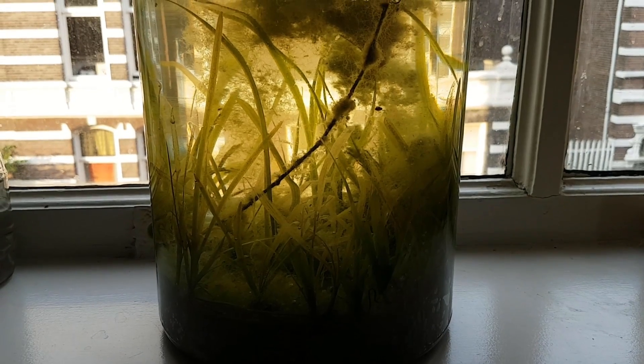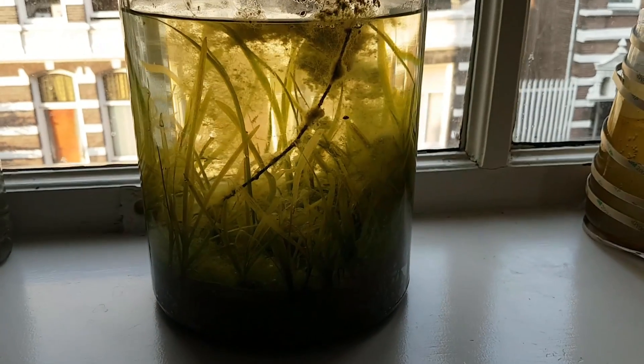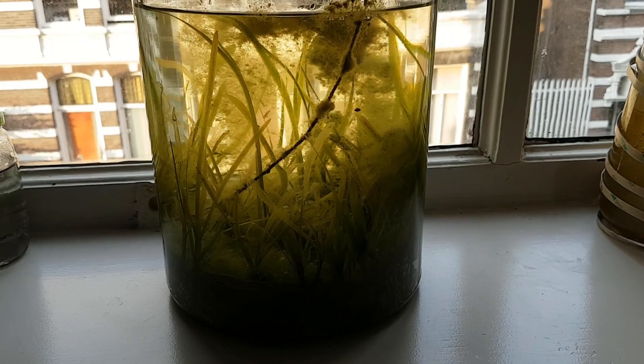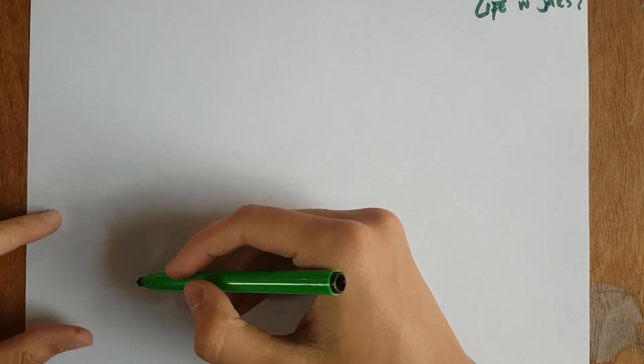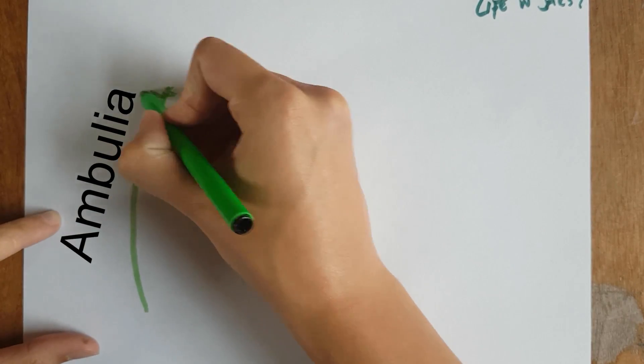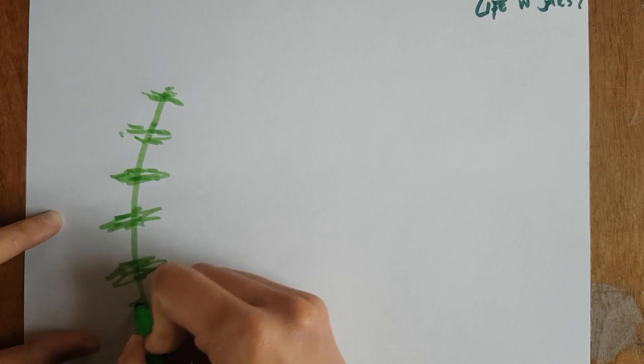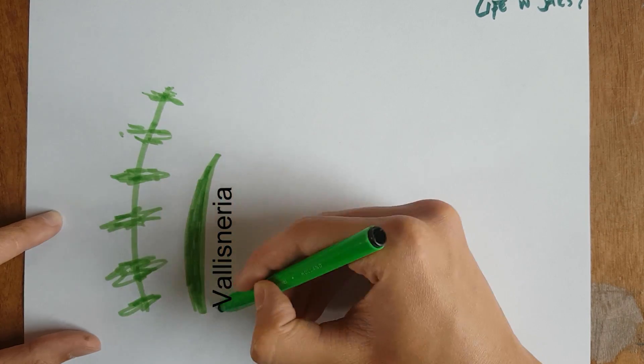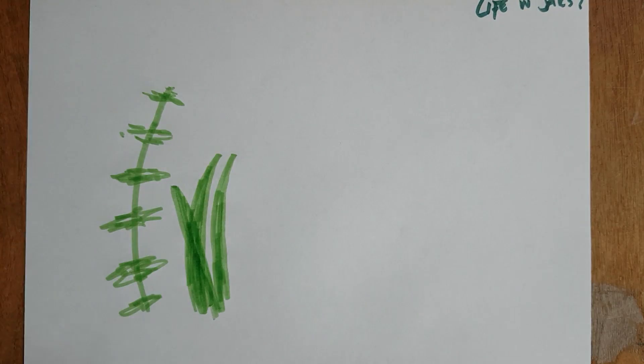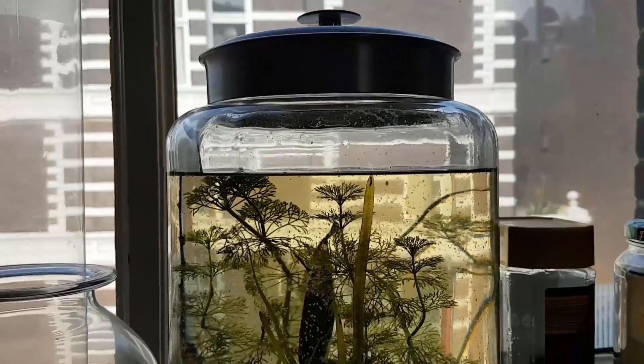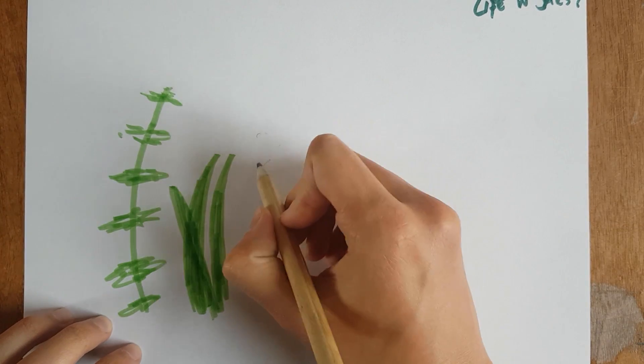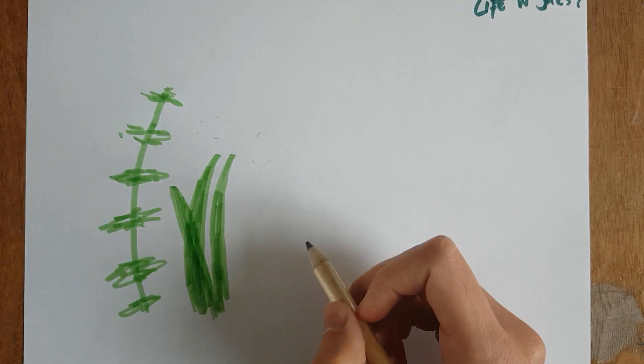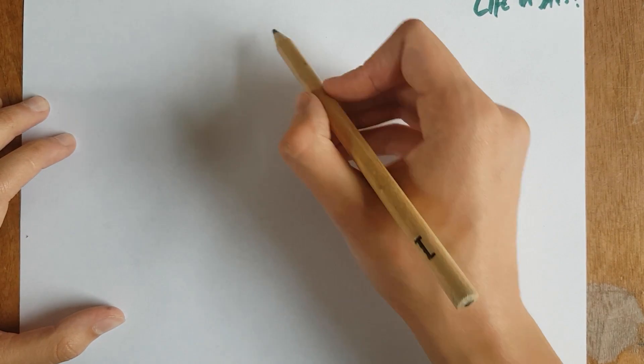You might have noticed that there aren't as many plants and animals in this ecosphere as there were two years ago. Let's talk about that. This ecosphere started out with both Ambulia and Vallisneria. They both had the same niche in this ecosystem. The same job, if you will. They both had to convert the carbon dioxide produced by the animals into oxygen for the animals to breathe through photosynthesis. And they had to get rid of organic waste by growing.